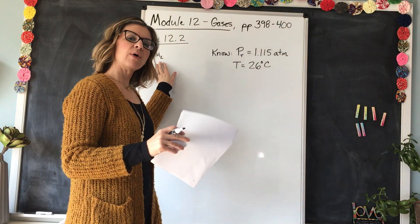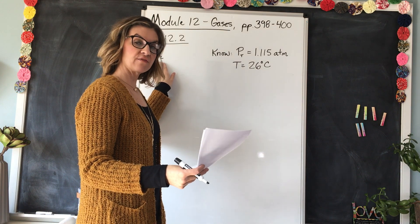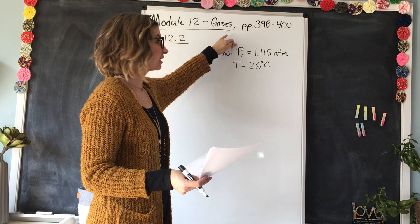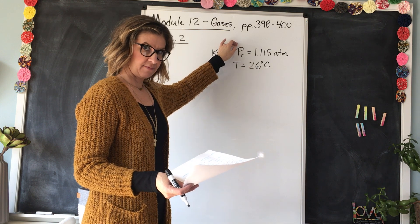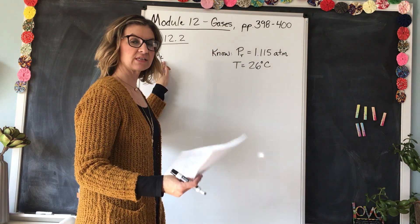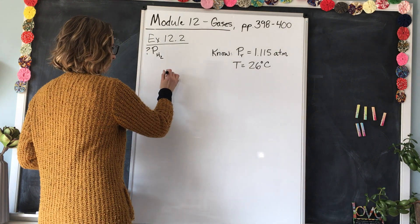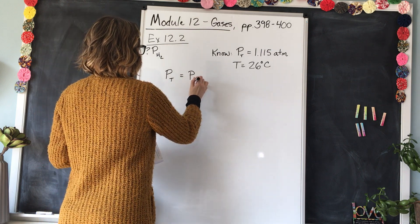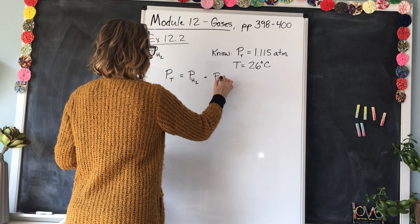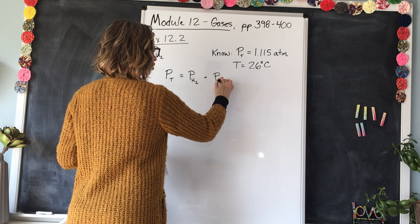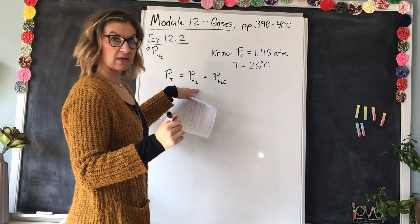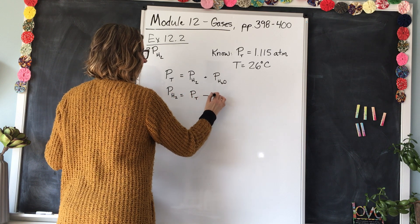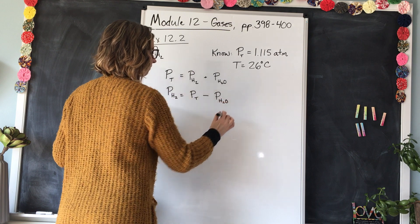We're interested in finding the pressure of the hydrogen that was collected, but since it was collected in the presence of water, water vapor is also present. So we're going to take the total pressure of the gas collected and subtract the water vapor pressure to find the pressure of just the hydrogen gas. We'll use P_total = P_H2 + P_H2O and solve for P_H2, so P_H2 = P_total − P_H2O.